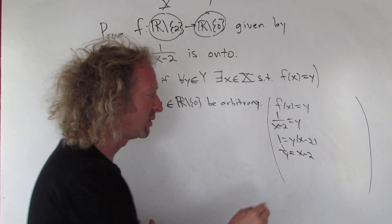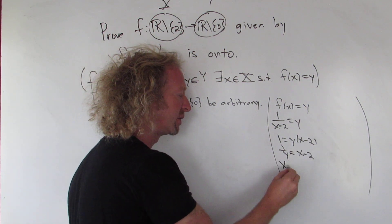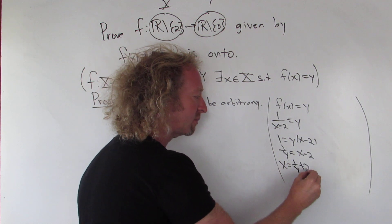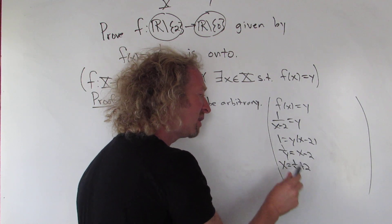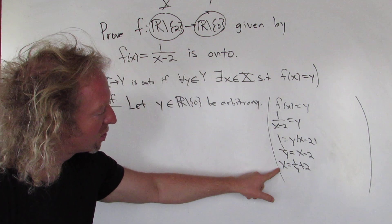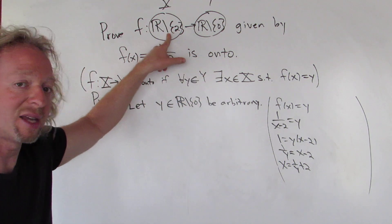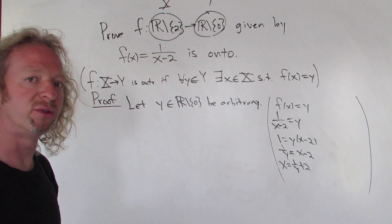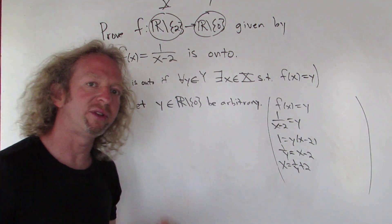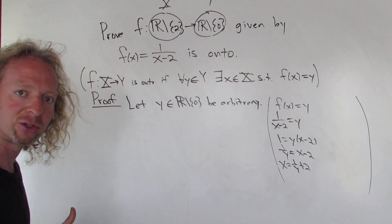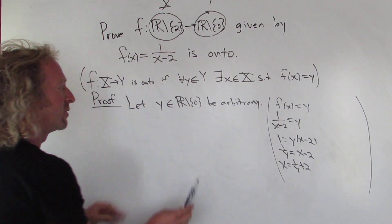Then add 2 to both sides, so x equals 1 over y plus 2. That's going to be our little x. We need to make sure that little x is in this set — we'll deal with that in the formal proof. Now we go back to the proof.